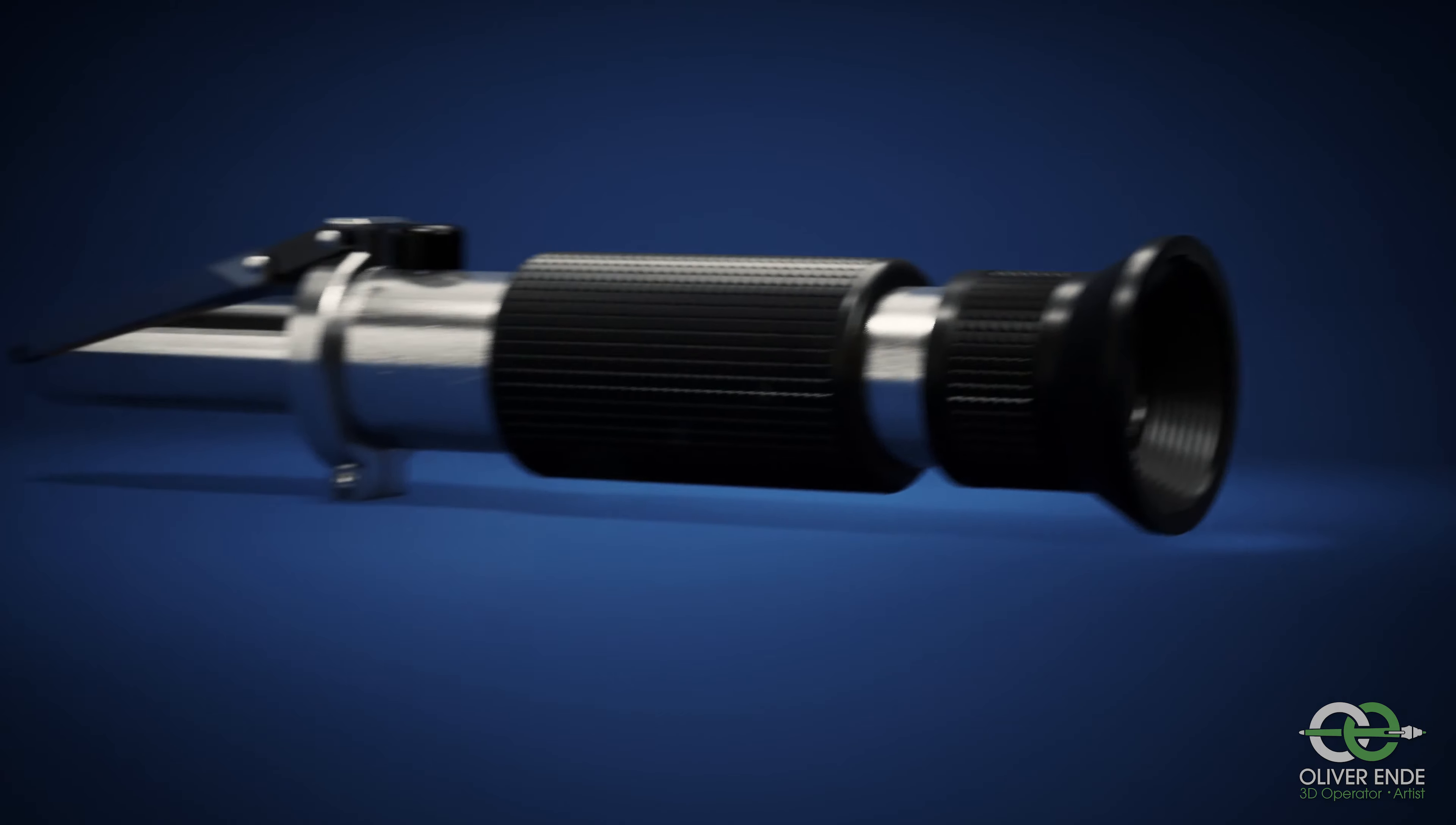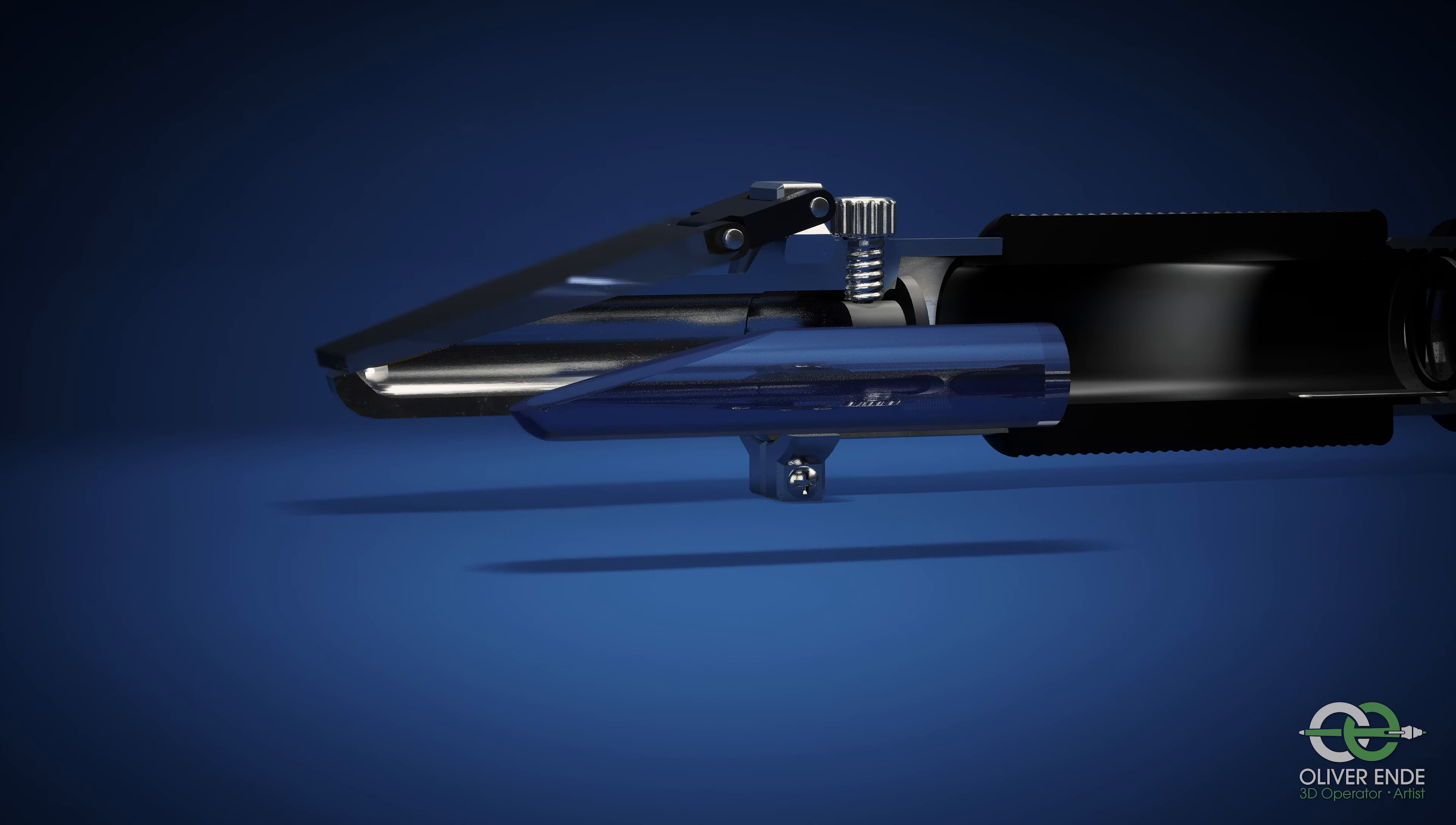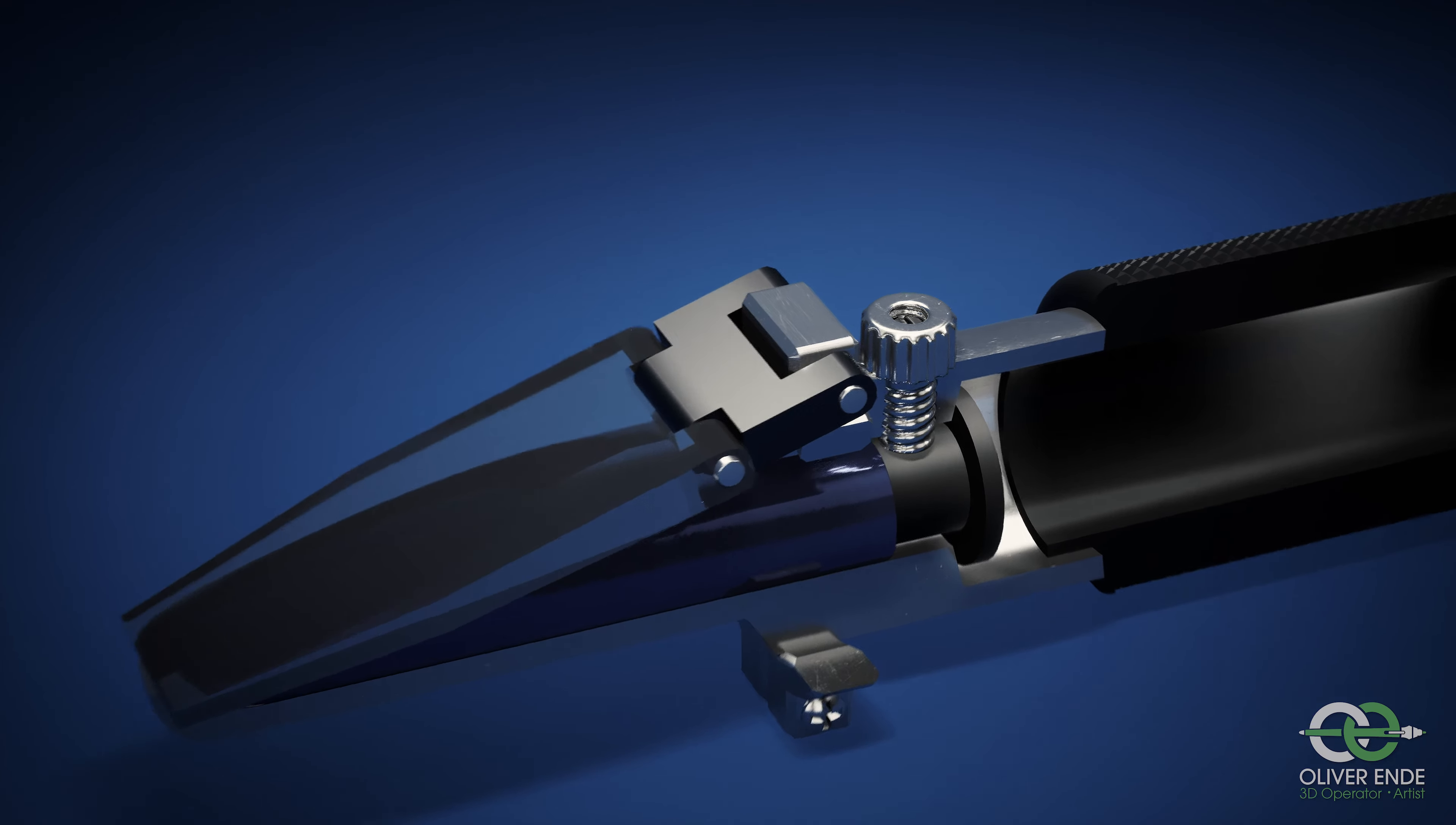A handheld refractometer is constructed as follows: In the front area there is a prism. Above it is a movable cover that distributes the liquid to be tested on the prism.